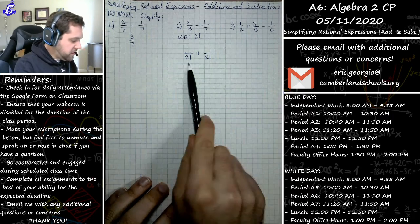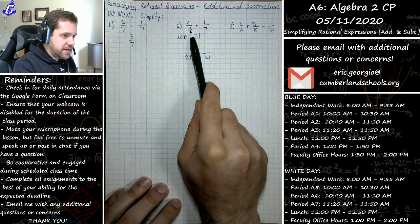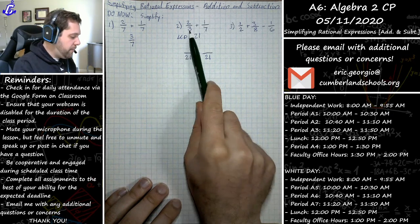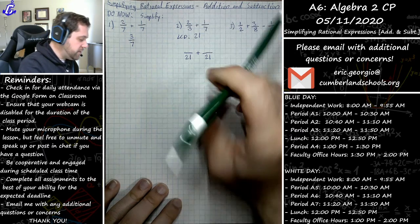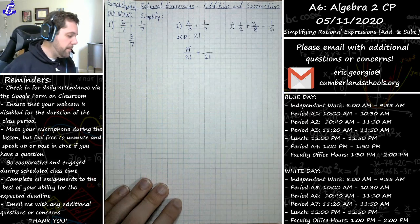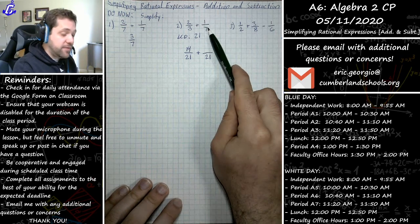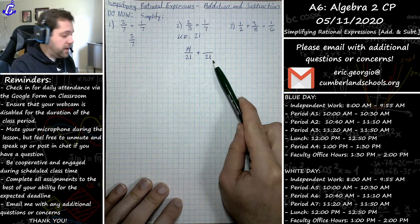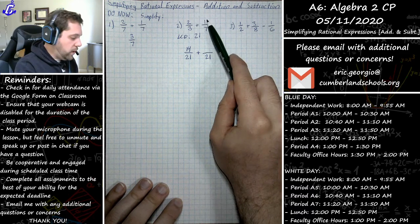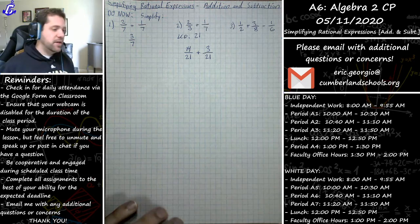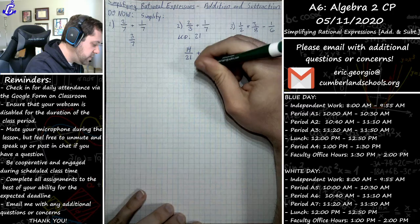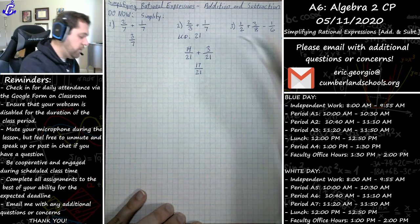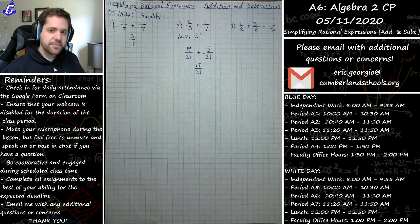Our goal is to convert both fractions to be out of 21. For two-thirds: multiply the denominator 3 by 7 to get 21, so multiply the numerator 2 by 7 to get 14. For one-seventh: multiply the denominator 7 by 3 to get 21, so multiply the numerator 1 by 3 to get 3. Now the denominators are the same: 14/21 plus 3/21 is 17/21.